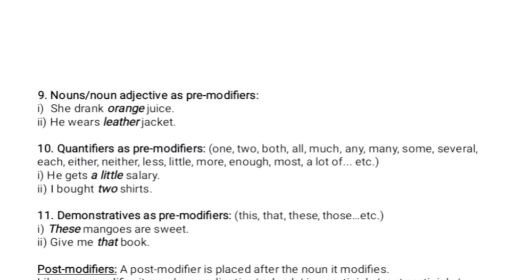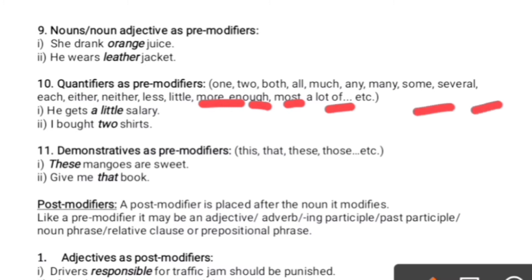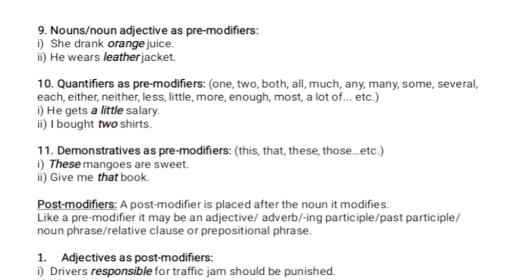The next pre-modifier is quantifiers — words that tell us about quantity, such as one, two, both, all, much, many, some, several, either, less, and similar words. For example: 'I bought two shirts' — here 'two' is a quantifier.